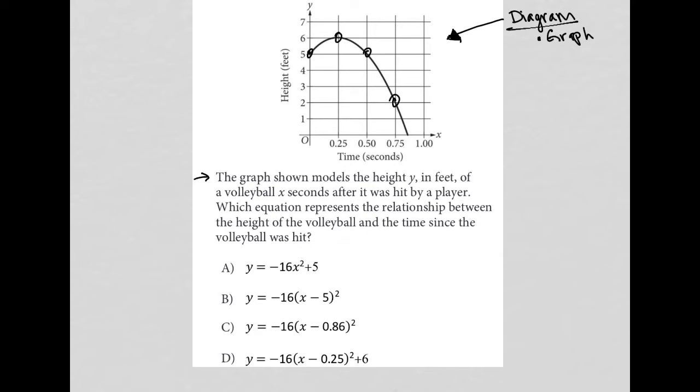So this question says the graph shown models the height y in feet of a volleyball x seconds after it was hit by a player. So we do see that the x-axis is time in seconds, the y-axis is height in feet. Which equation represents the relationship between the height of the volleyball and the time since the volleyball was hit?